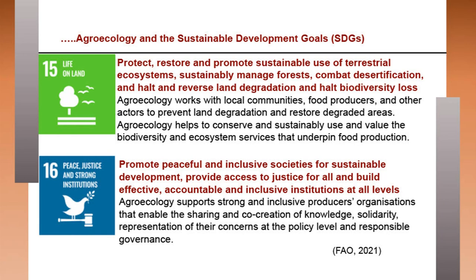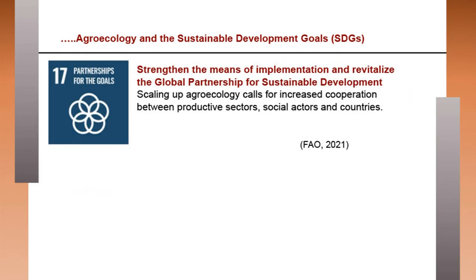SDG 16 is peace, justice and strong institutions: promote peaceful and inclusive societies, provide access to justice for all and build effective, accountable and inclusive institutions. Agroecology supports strong and inclusive producers' organizations enabling sharing and co-creation of knowledge, solidarity, representation at policy level and responsible governance. SDG 17 is partnership for goals: scaling of agroecology calls for increased cooperation between productive sectors, social actors and countries.